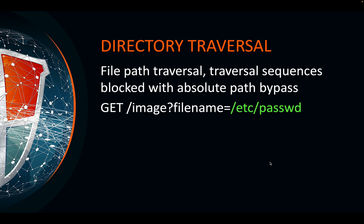Sometimes they have filters in place, but they can be bypassed. This example here is one where the path traversal sequences are filtered out, but you can still put in a forward slash /etc/passwd and still get to it that way. This would mean you're starting at the root directory, going into /etc, and then reading passwd.